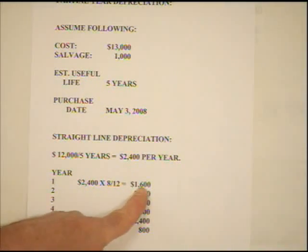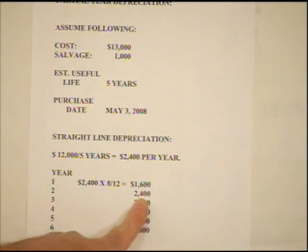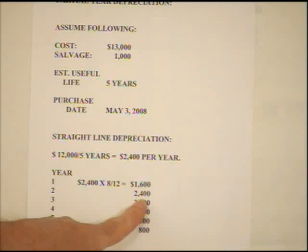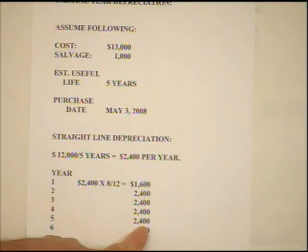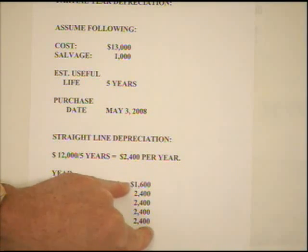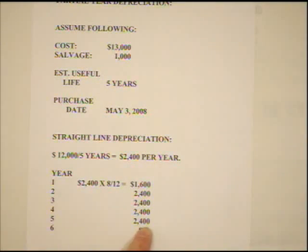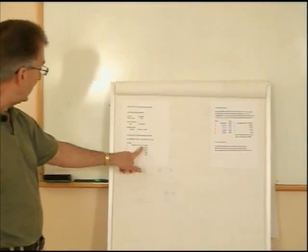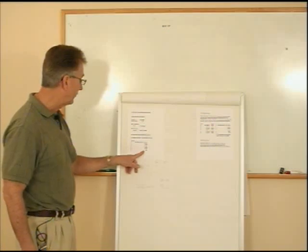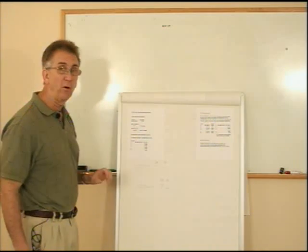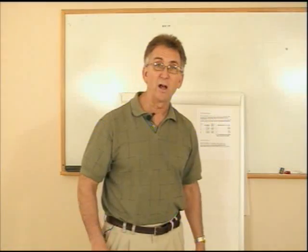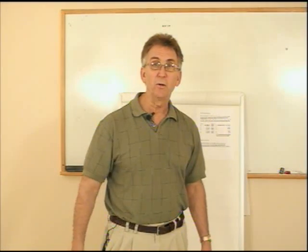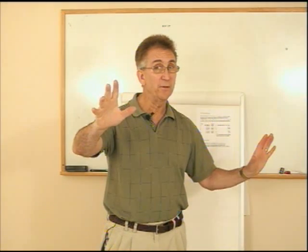In the second year we'd take the full $2,400 because we had it the whole time, and each year thereafter we'd take $2,400. Because we only got $1,600 in the beginning instead of the full $2,400, we have $800 remaining, so we take that $800 in the sixth year — covering the last four months. If I total all of these up, they give me $12,000. That's how you prorate for a partial year of depreciation. That's all for straight line. Next time: double declining balance.